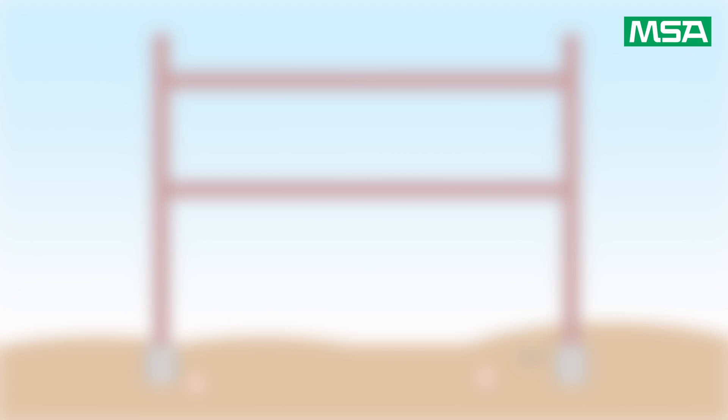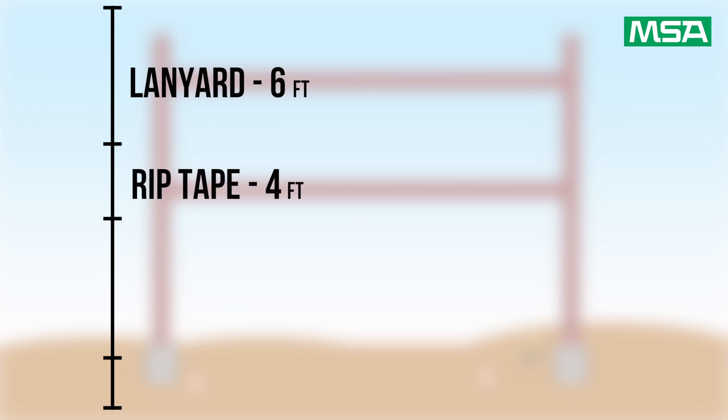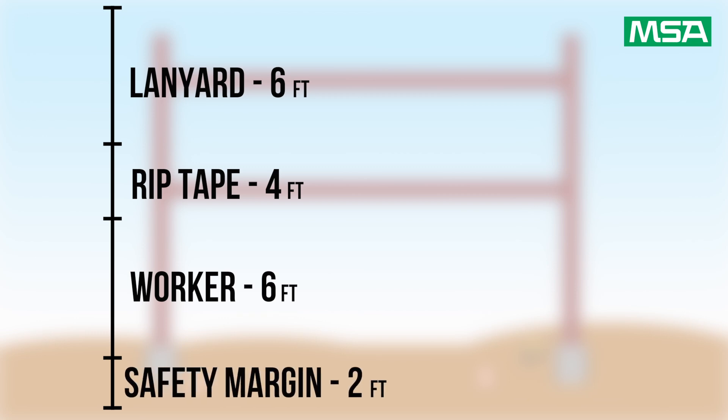Now let's calculate the minimum clearance needed for a safe fall distance. Bob is on a six-foot lanyard with four feet of shock absorbing rip tape. He himself is six feet tall, and we're gonna add an additional two feet as a safety margin.